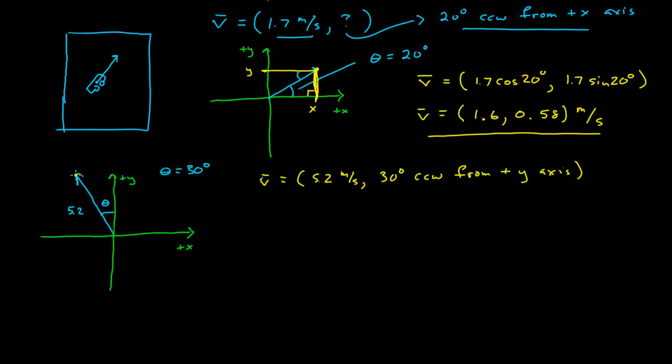So, again, if I'm going to find the numbers that uniquely define this, I'm looking for the coordinate points of the tip of the vector when its tail is at the origin. And so, in this case, the x-coordinate is going to be the length of this side.